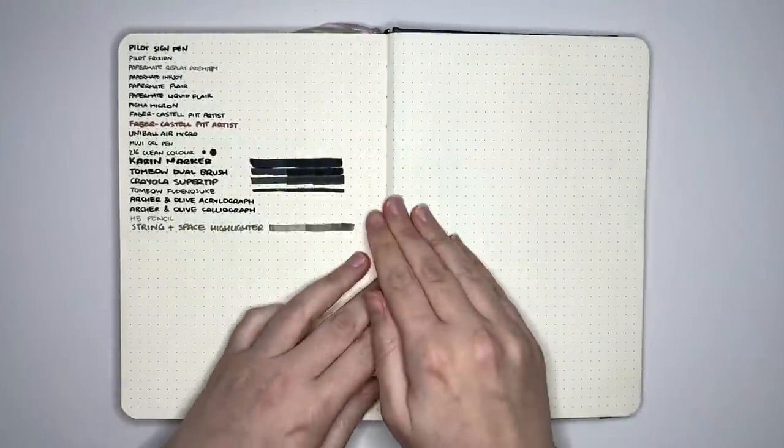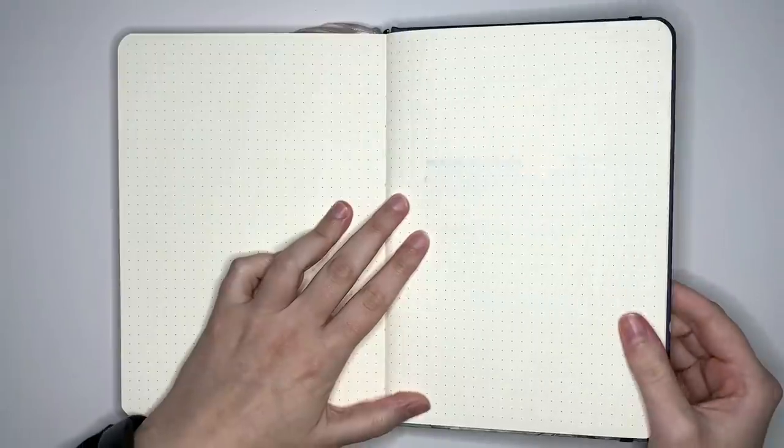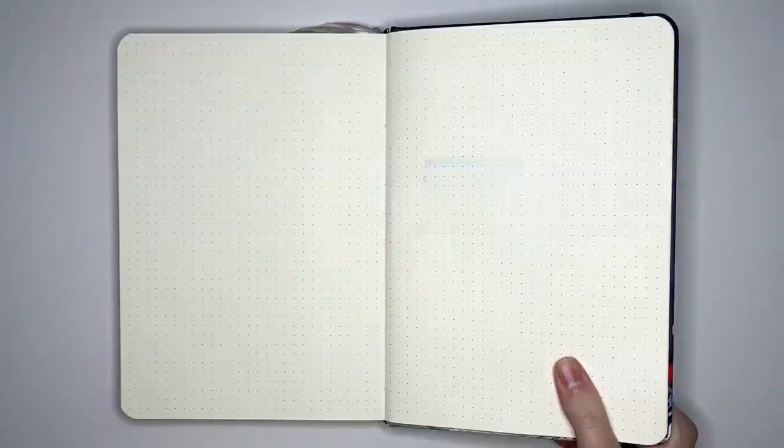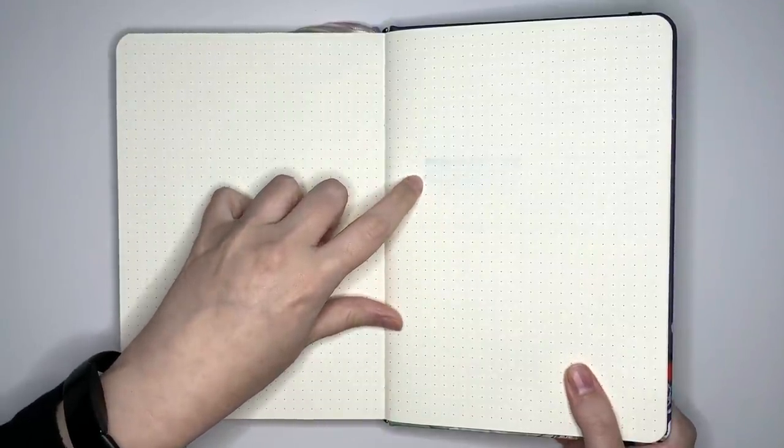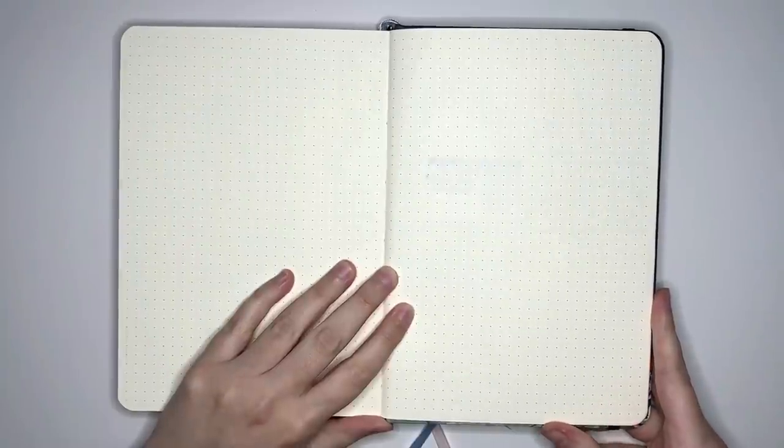If we flip back, though, and see if we have any ghosting or bleeding. So we can see, with the Karin Marker in particular, which is very inky, we can see that one through the page, and once you go over multiple times, you do get a fair bit of ghosting, almost into that bleed-through possibility. And the other one we have here, this one is the Crayola Super Tip. So when we went over multiple times with that, that was four times, we did get a bit of that ink dump there, and that did show up. For the rest of our pens, though, it's really not too bad at all.